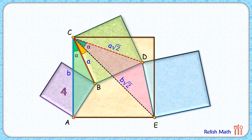So the AB length is 2 centimeters, and thus the DE length will be √2 times AB, so DE length will be 2√2 centimeters. The area of the blue square will be the square of 2√2, which is 8 centimeter square — and that's our answer.